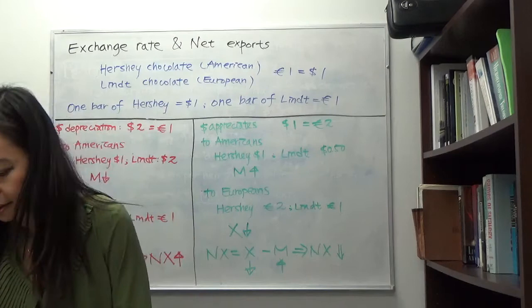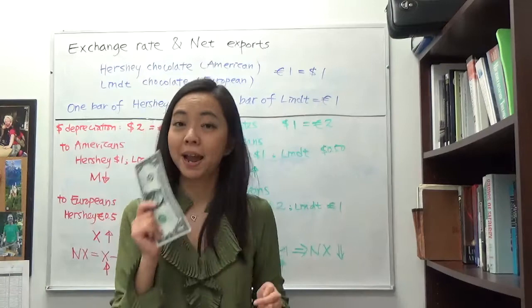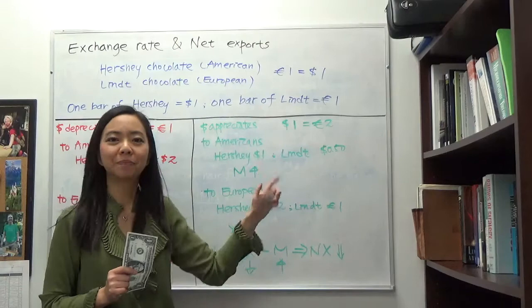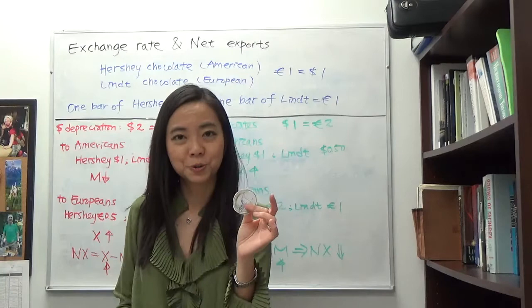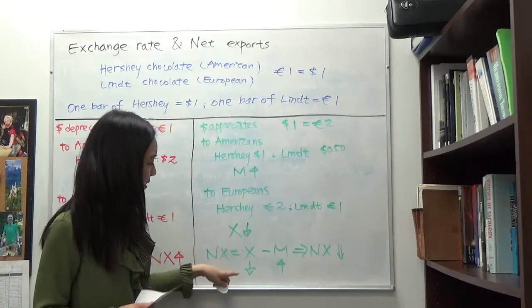When the dollar appreciates, figuratively it's kind of like this: we have a big dollar, and relatively the euro is small. Therefore, with the big dollar, you can afford to buy a lot of goods from abroad, so our imports go up. And relatively, Europeans using their smaller euro can't afford to buy a lot of our goods, so our exports go down. Don't memorize — use your intuition and your imagination. Thanks for watching and good luck with your studying.